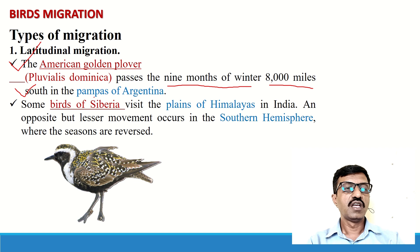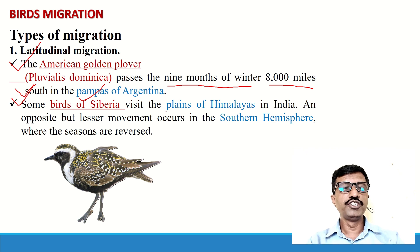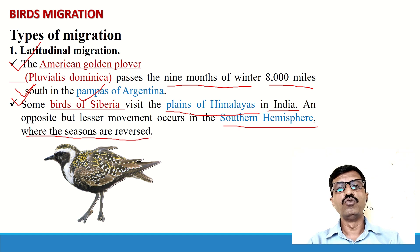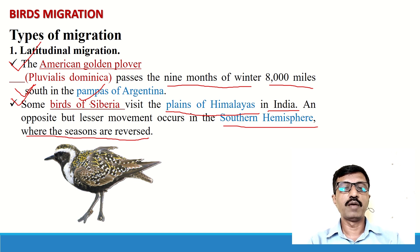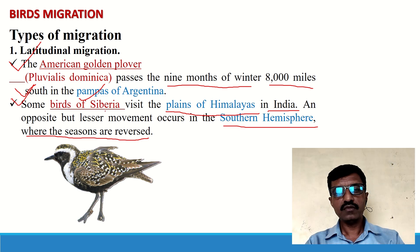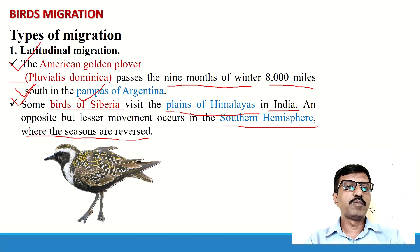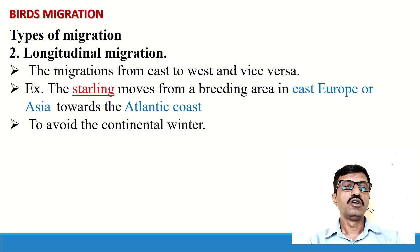Another example: some birds of Siberia visit the plains of the Himalayas in India. The opposite but lesser movement occurs in the southern hemisphere where the seasons are reversed. Whenever conditions become unfavorable for living or feeding, birds can migrate. So some Siberian birds visit the plains of the Himalayas in India and then travel towards the southern hemisphere when conditions become favorable there.